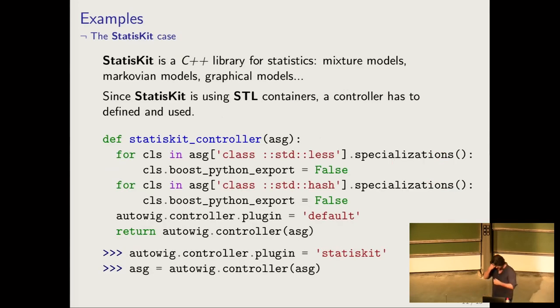Just an example with the StatistKit case. First, StatistKit is depending on Eigen, so the ASG that you give to the controller is the same as you had in the Eigen library in order to know which components you already wrapped. And here, since we're using STL containers, we need to have some controller that tells AutoWig not to wrap some classes that are not really interesting, such as std::less, std::hash, and execute them on the ASG.